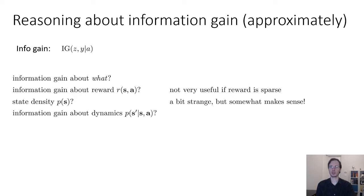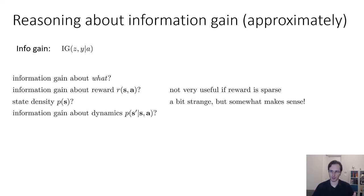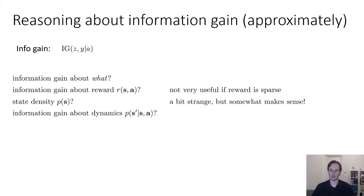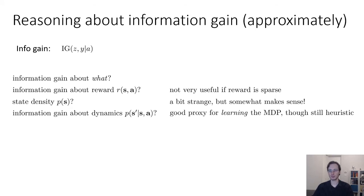Another thing you could do is information gain about dynamics, about P(s' | s, a). This is a very reasonable choice because information gain about the dynamics shows that you're learning something about the MDP. If you assume that the reward of the MDP is mostly sparse — mostly zero everywhere — then the main thing to learn about is the dynamics. Since the MDP is fully determined by the initial state, the dynamics, and the reward, and the reward is not informative, it makes sense to ask for information gain about the dynamics. This is a good proxy for learning the MDP, though it's still a heuristic.